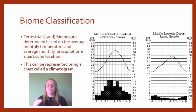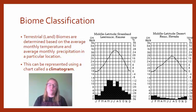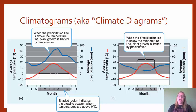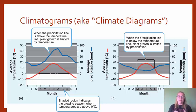Not all climatograms have a bar graph and a line graph — some have two differently colored lines. Typically in a black and white diagram you'll have a bar graph and a line graph. On the slides showing climatograms for each biome, the average temperature is a red line and the average precipitation is a blue line. As you get really good at analyzing them, you should be able to quickly look at a climatogram and accurately guess what biome is at that location.